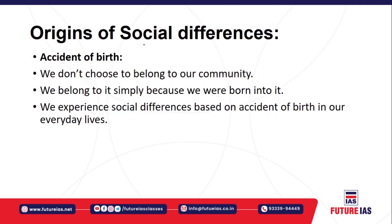Now let us understand the origins of social differences. Why do these social differences exist in various countries? In India, differences are based on caste, while in the USA and some Western countries, it is based on racial criteria. Elsewhere, social differences may arise from other criteria.